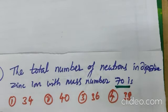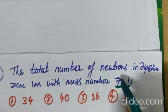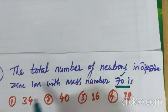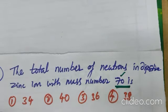A minus Z. A value is given, 70. Total number of neutrons in di-positive zinc ion. Zinc atomic number, having idea? 30. So, answer is what? Zinc atomic number is 30. Mass number is 70.